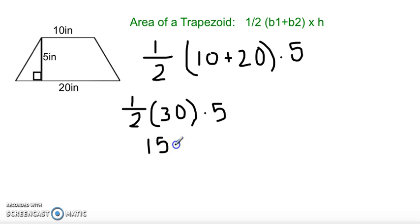So, that brings us to 15 times 5. And when multiplying 15 times 5, because 15 is the two bases added together multiplied by one half, and the 5 is the height of the trapezoid, we get 15 times 5 as 75 inches squared.